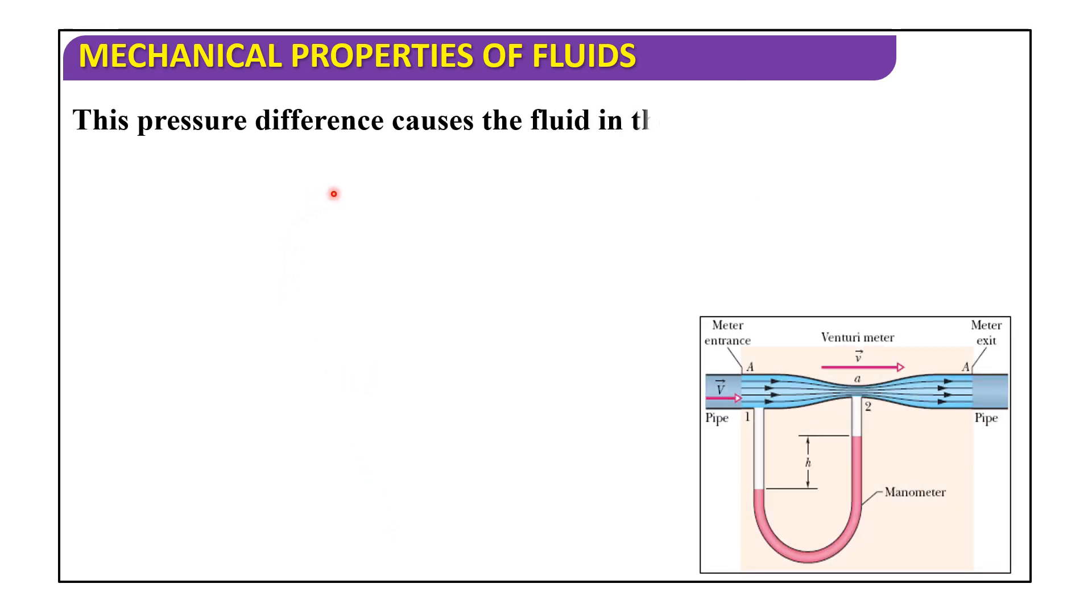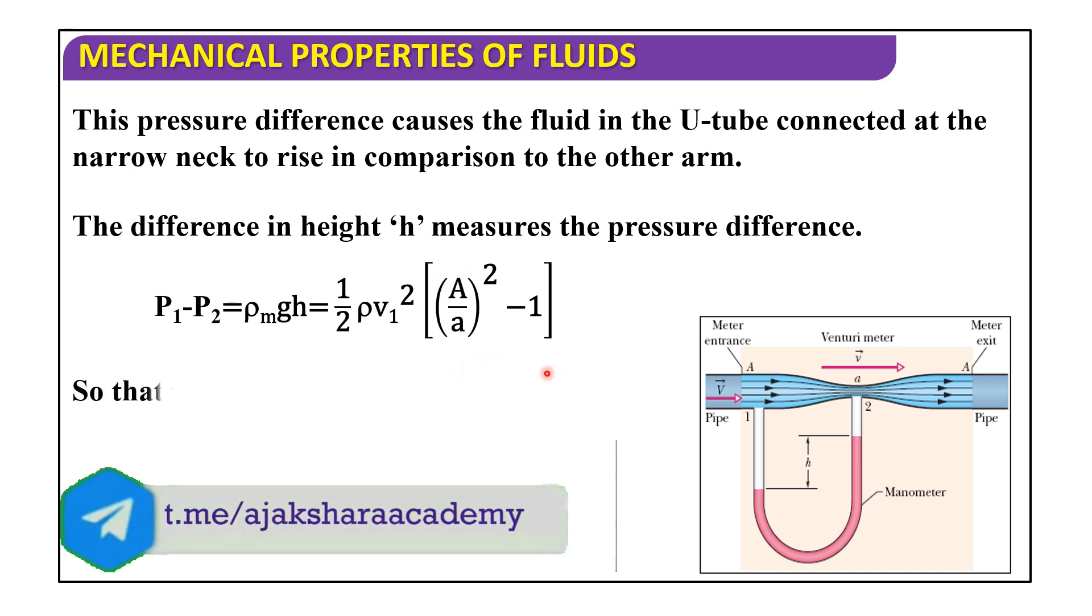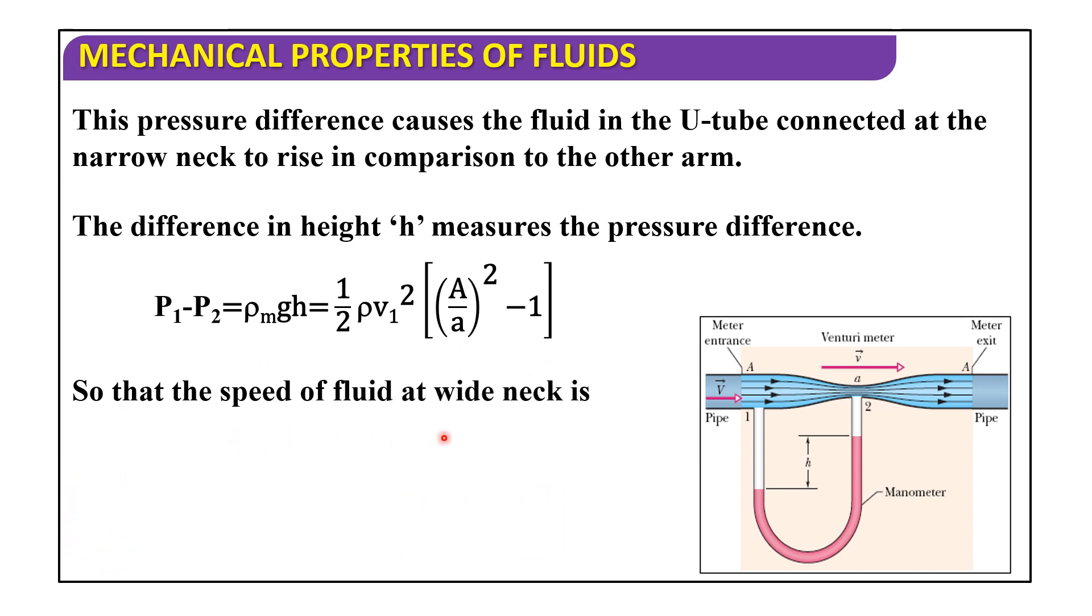So that p1 - p2 equals (1/2)ρv1²[(A/a)² - 1]. Now, this pressure difference causes the fluid in the U tube connected at the narrow neck to rise in comparison to the other arm. The difference in height h measures the pressure difference. So p1 - p2 equals ρ_m·gh equals (1/2)ρv1²[(A/a)² - 1]. So that the speed of fluid at wide neck is v1 equals square root of [(2ρ_m·gh)/ρ]·[(A/a)² - 1]^(-1/2).